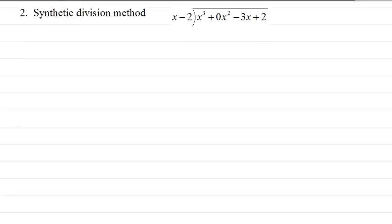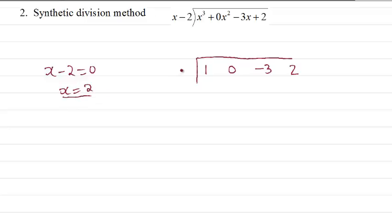Here comes the second method, synthetic division. We write the coefficients here: 1, 0, minus 3, then 2. Because we divide by x minus 2, we solve it, so x equal to 2 is the answer. So we write 2 here.